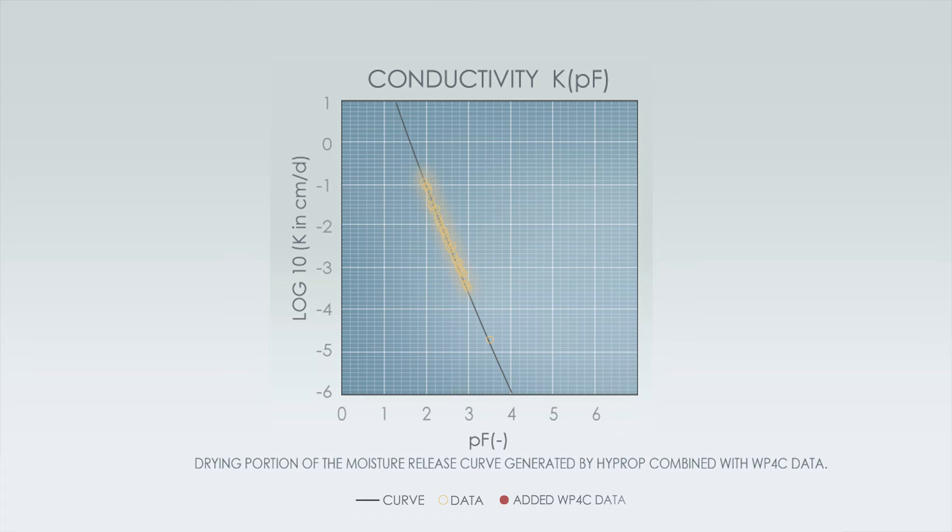The HyProp also gives a value for unsaturated hydraulic conductivity which is very useful when trying to understand how water is going to move through soil in unsaturated conditions.